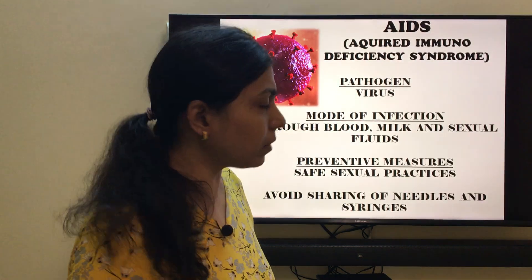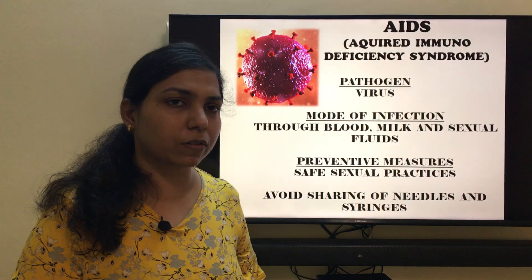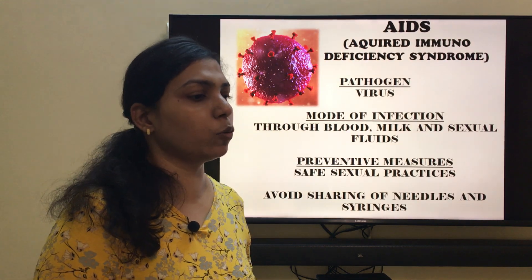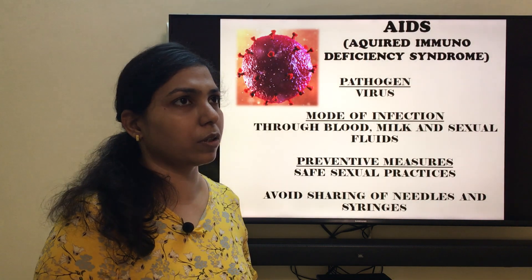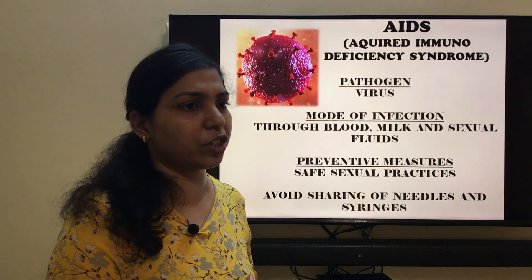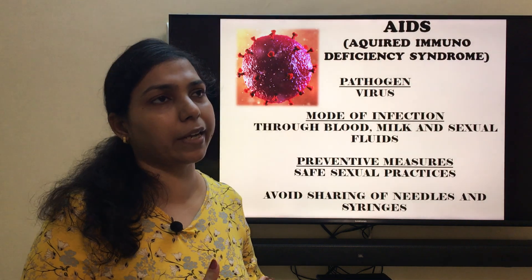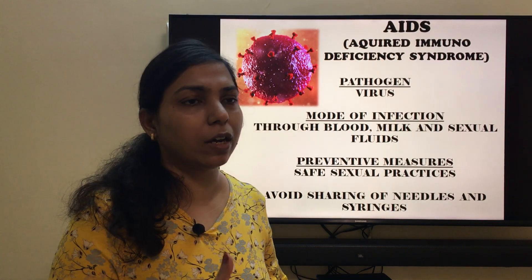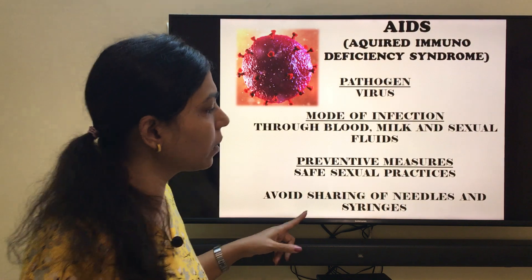Next is AIDS. The full form of AIDS is Acquired Immunodeficiency Syndrome, caused by the HIV virus. The mode of infection includes spread through blood — for example, drug addicts sharing needles and syringes can get infected. It can also be spread through milk and sexual fluids, and it can be transferred from a mother to a child in the womb or through breast milk. Preventive measures include safe sexual practices and avoiding sharing of needles and syringes.